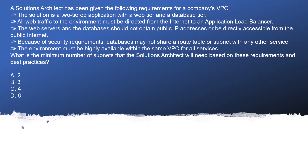Let's jump into the question. A solution has been given the following requirements for a company's VPC. It is a two-tier application with a web tier and a database tier. All web traffic to the environment must be directed from the internet to an application load balancer. The web servers and database should not obtain a public IP address or be directly accessible from a public subnet - so we must keep these two servers in the private subnet.